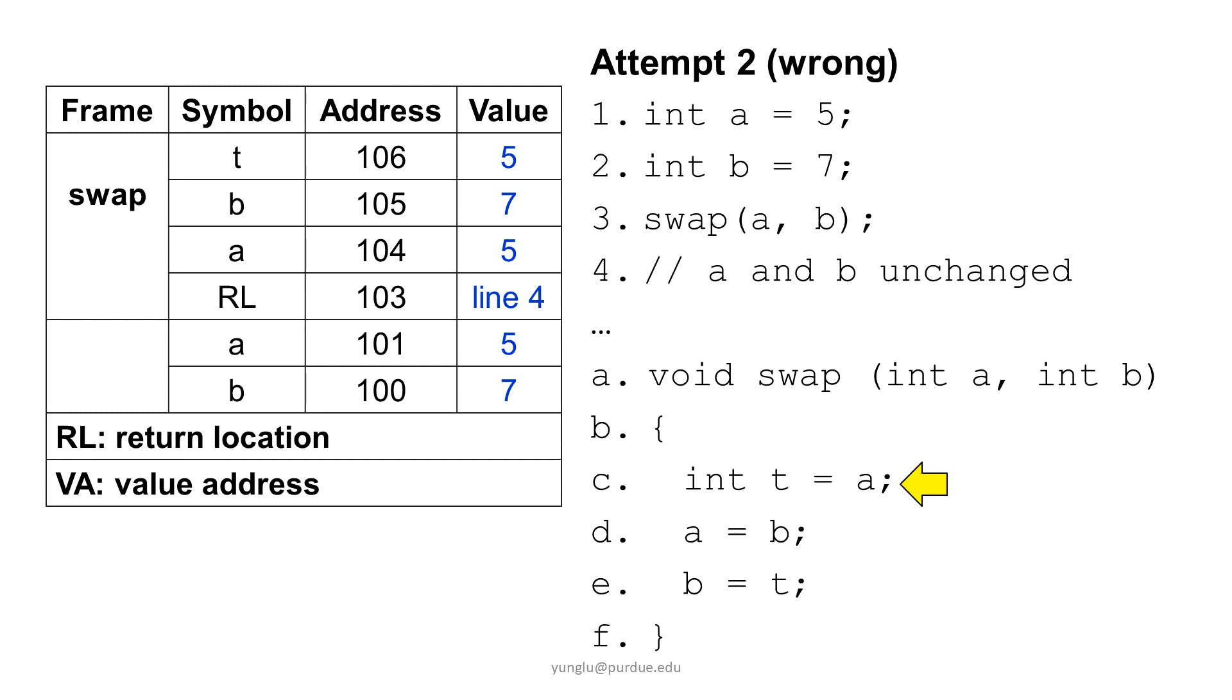The return location is line 4. Since the swap function returns nothing, there's no value address. The arguments a and b are 5 and 7 respectively. The local variable t is assigned the value of a, so t's value is 5. The program moves to the next line and assigns b's value to a, so a's value becomes 7.